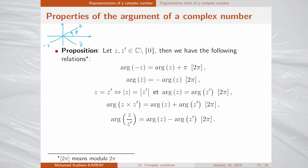Here are useful properties of the argument. First, the argument of minus z equals the argument of z plus π. We can see this in a figure: representing z with argument θ, minus z has argument θ + π, since the angle between them is precisely π.